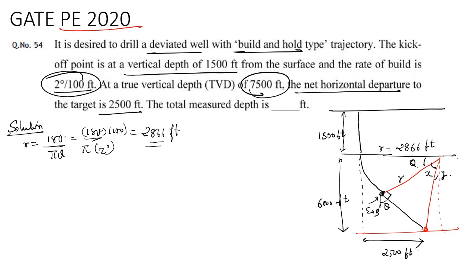If this is 2866 feet and this is 2500 feet, then this length would be equal to 366 feet. Now let's calculate angle y. From the right angle triangle, if I want to calculate tan y, that would be equal to 366 upon 6000 feet. So y will be equal to tan inverse of 366 upon 6000, giving y equal to 3.5 degrees.